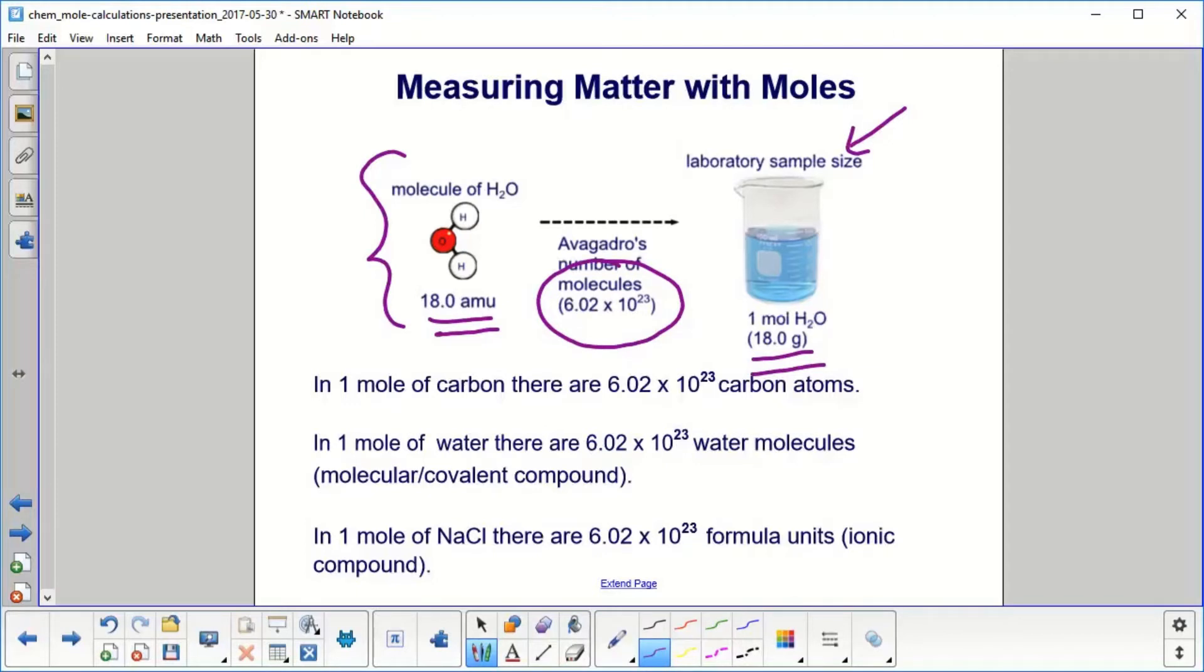In one mole of carbon, there are 6.02 times 10 to the 23rd carbon atoms. In one mole of water, there are 6.02 times 10 to the 23rd water molecules - that works for any molecular or covalent compound. In one mole of salt, sodium chloride, there are 6.02 times 10 to the 23rd formula units, which we use for ionic compounds.